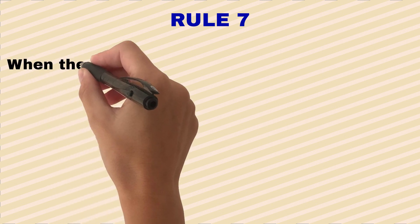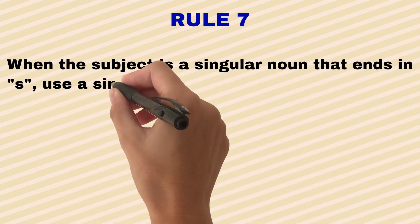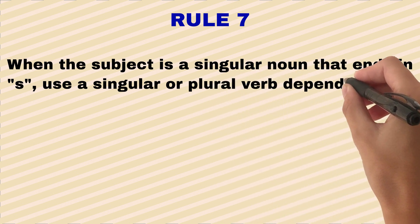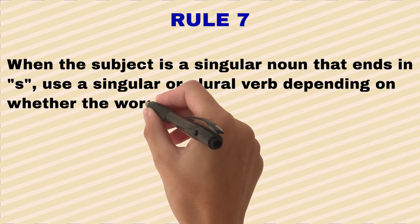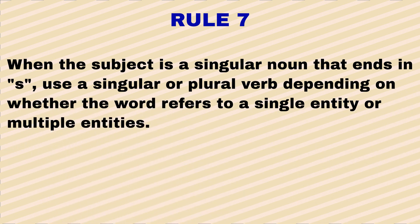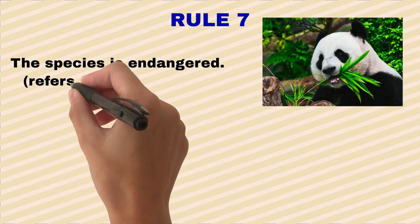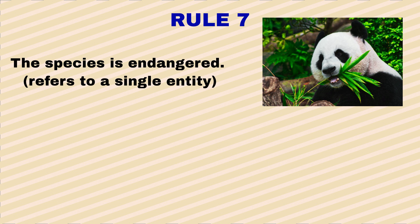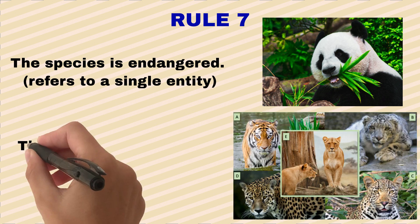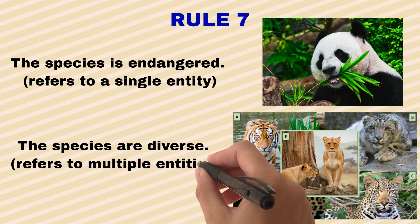When the subject is a singular noun that ends in 's,' use a singular or plural verb depending on whether the word refers to a single entity or multiple entities. For example, 'The species is endangered' — it refers to a single entity. 'The species are diverse' — it refers to multiple entities.